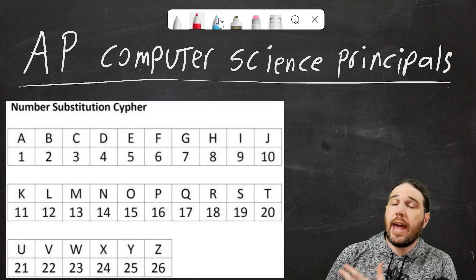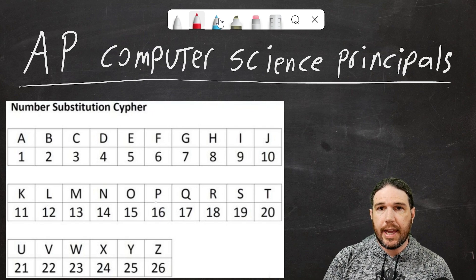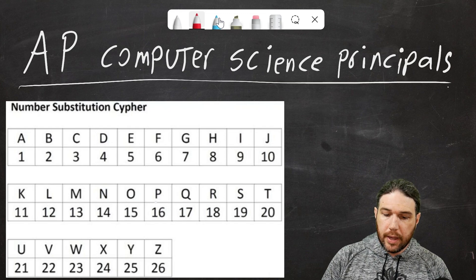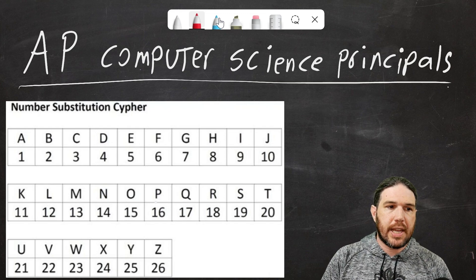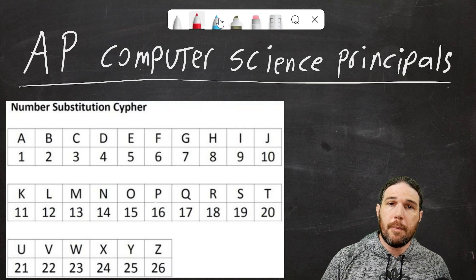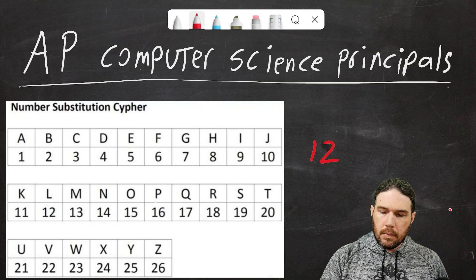So here we have the number substitution cipher that I used to make my hello world message. A is 1, B is 2, C is 3, etc. It's very simple, very easy to understand, but there are a couple of big problems with it right away.